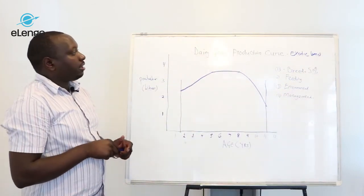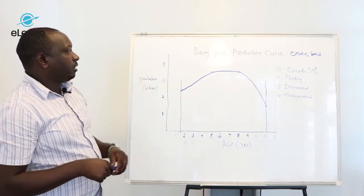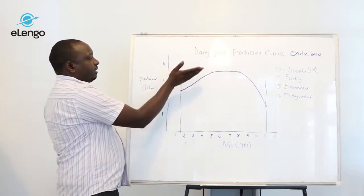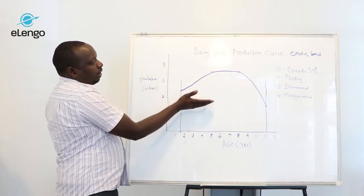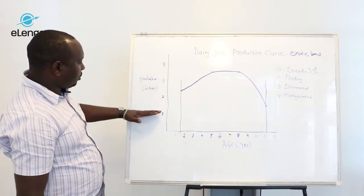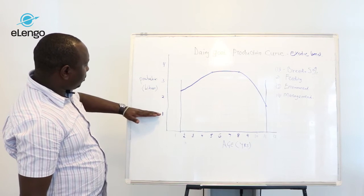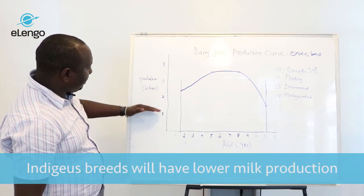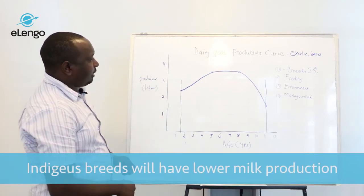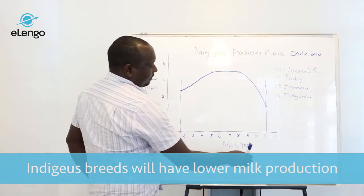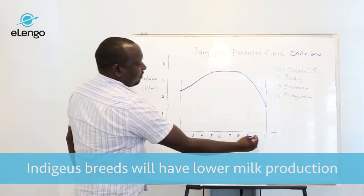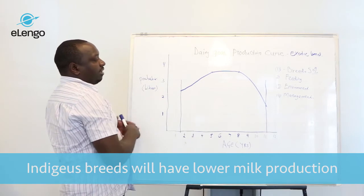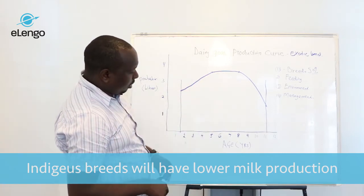For the indigenous breeds or the local breeds, this curve might be lower because the milk production rate is a little bit lower and it might not even achieve this year. It can be even less, so the curve will be a little bit lower.